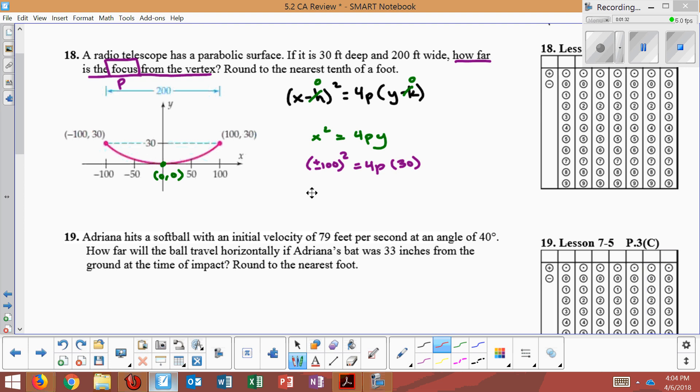So 100 squared is 10,000. 4 times 30 is 120. Now, to get P by itself, I divide by 120. So 10,000 divided by 120 is the same thing as 1,000 divided by 12.